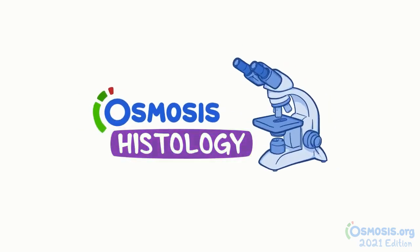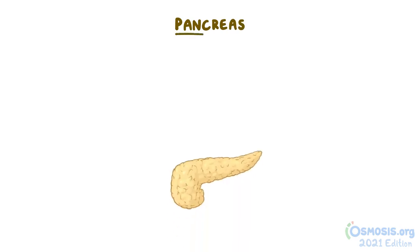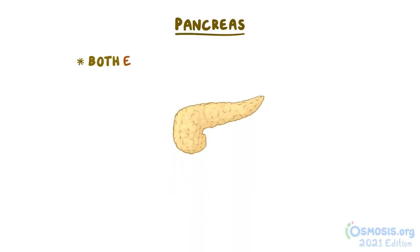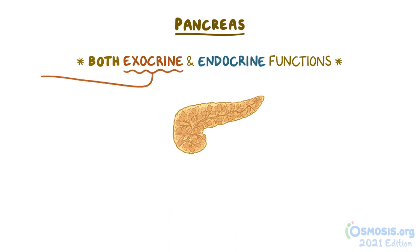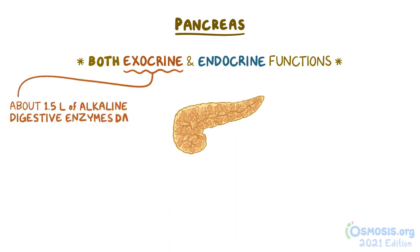Now, let's get a closer look. The pancreas is a large gland that has both exocrine and endocrine functions. The majority of the pancreas consists of exocrine glands that produce about 1.5 liters of alkaline digestive enzymes daily, which is secreted directly into the duodenum.